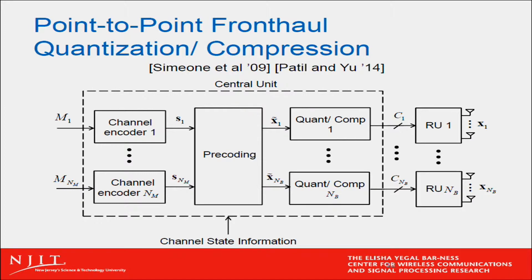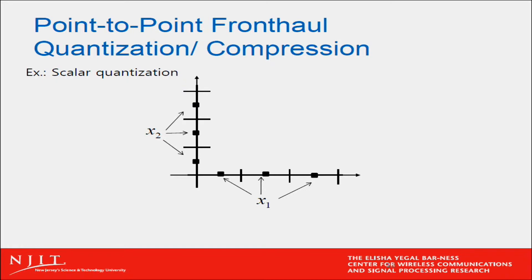The key point is that this quantization is done separately for each fronthaul link. So despite the fact that in CRAN we have the ability to jointly process all these signals, in the conventional implementation it seems natural to just quantize each signal separately for each radio unit. To see why this approach is suboptimal, we need to take a network view of the problem, inspired by network information theory, which is in fact the framework that informed the whole project.